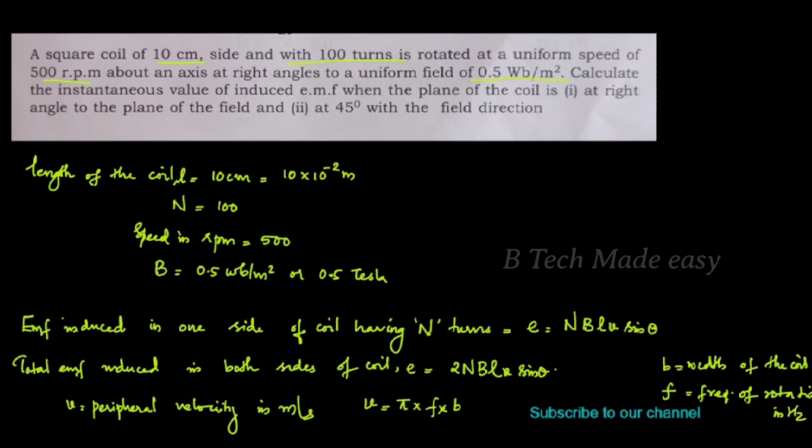First question: calculate the instantaneous value of induced EMF when the plane of the coil is at right angles to the field. For this case, θ = 90 degrees.